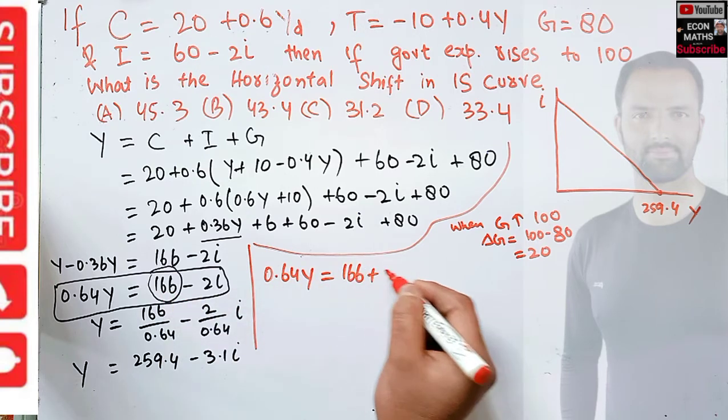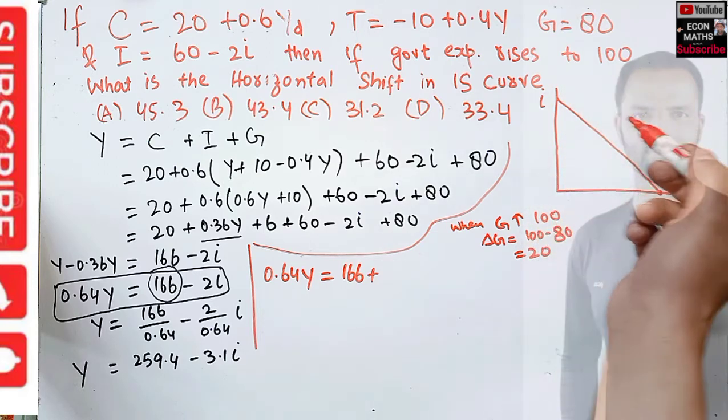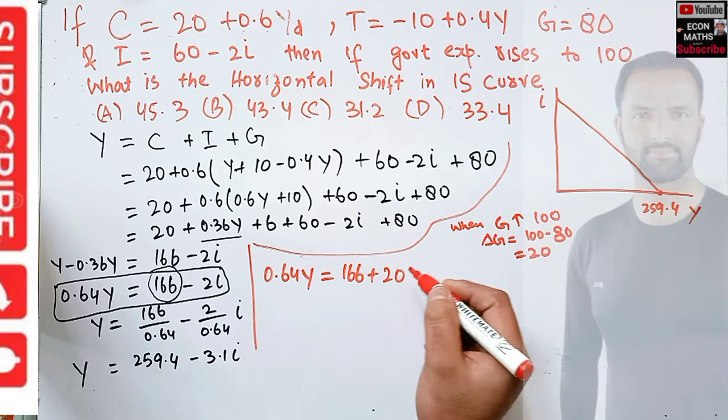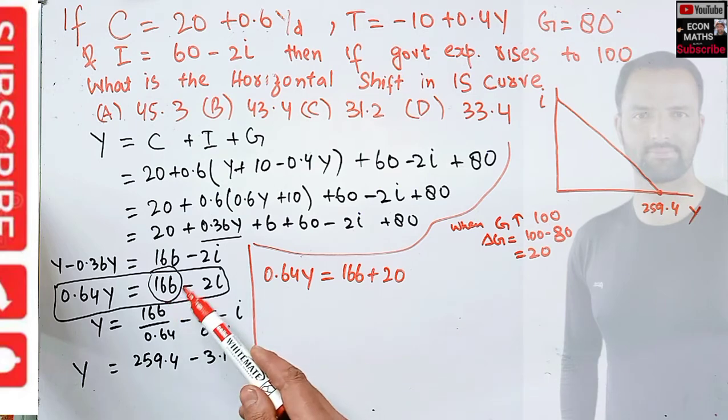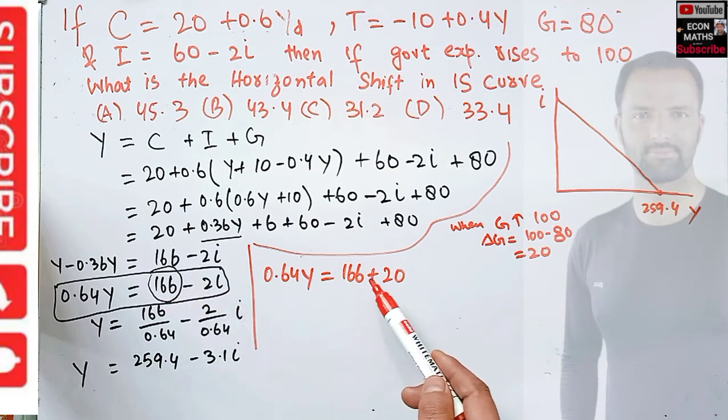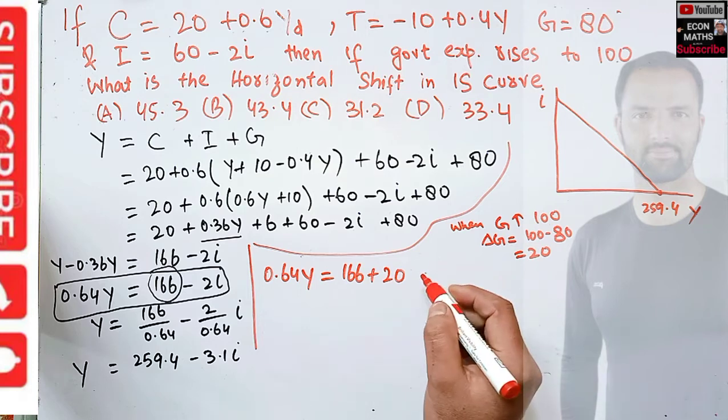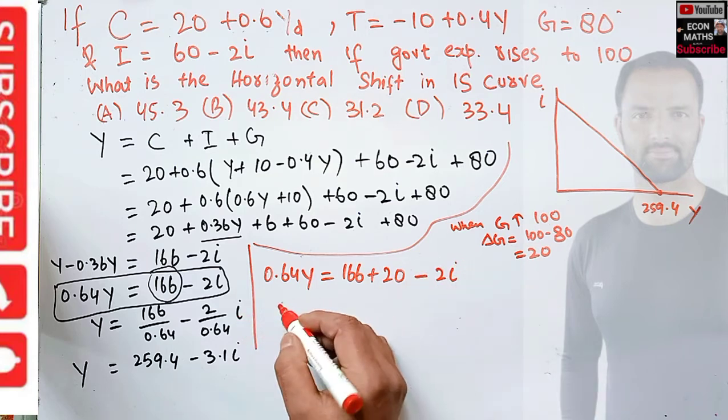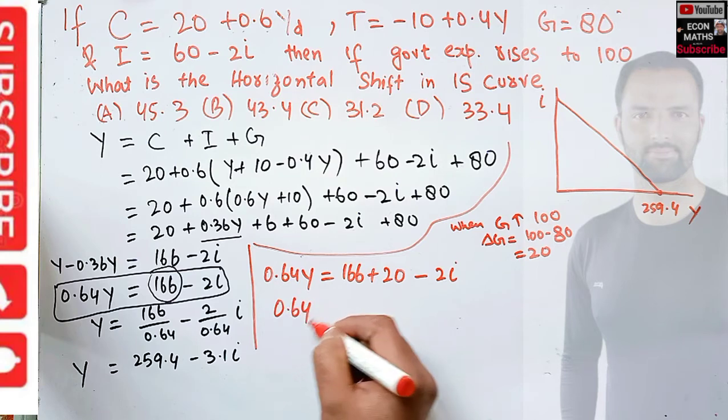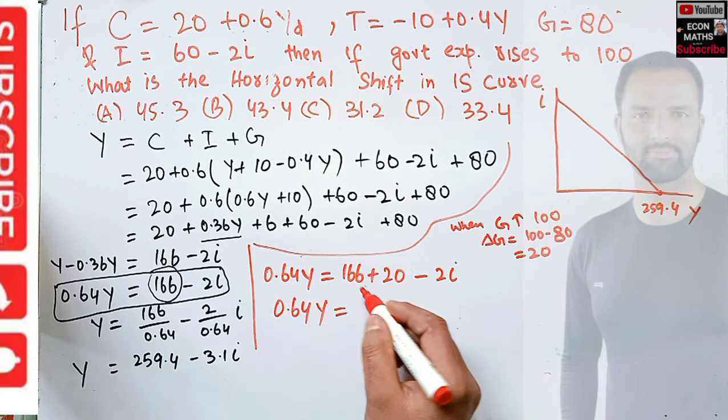This means the intercept will increase by 20. In this equation we add the increase in government expenditure, so 0.64Y = 166 + 20 - 2i. Originally government expenditure was 80, it increases to 100, so change in government expenditure is 20.